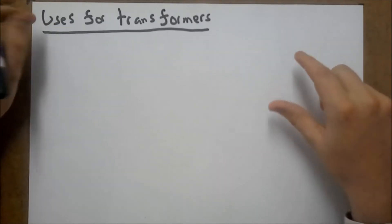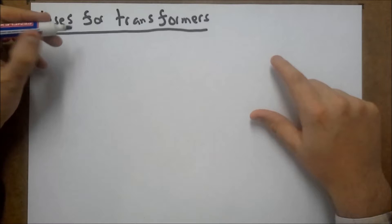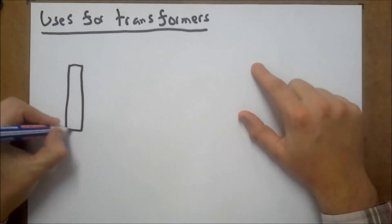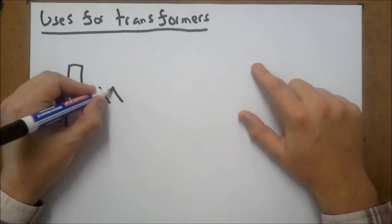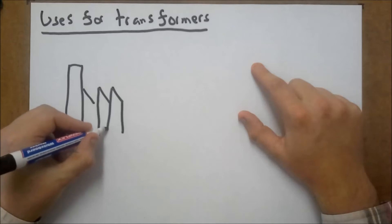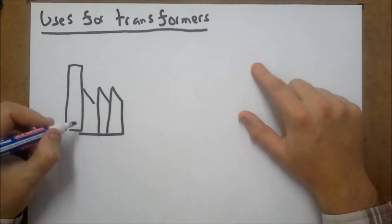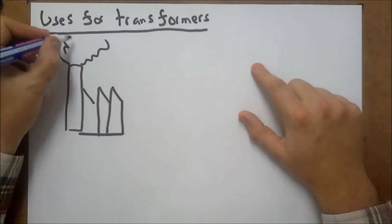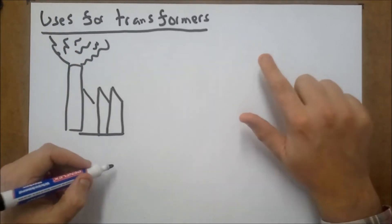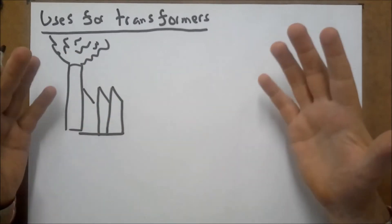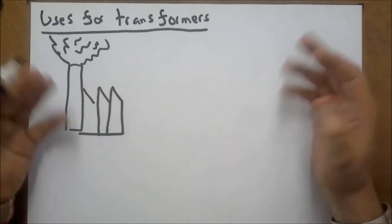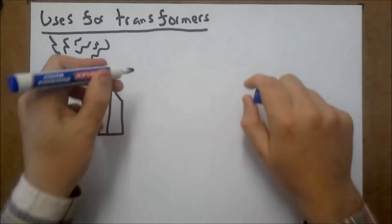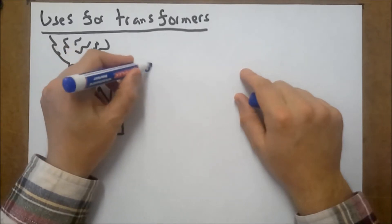Now, one use of transformers is electricity distribution. You may have your little power station — here's my little power station. It could be coal, wind, nuclear, anything. I'm going to be a bit environmentally unfriendly and make this a coal power station. Inside the coal power station, you've got generators that are probably going to make electricity of around 25,000 volts.